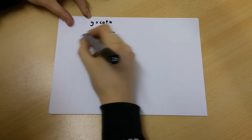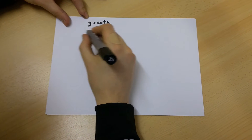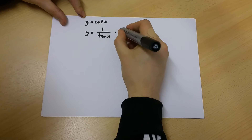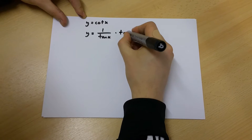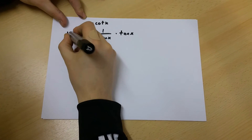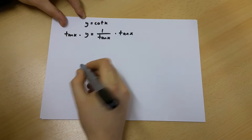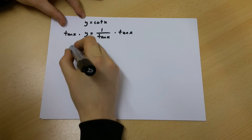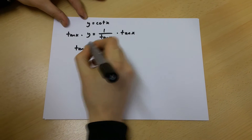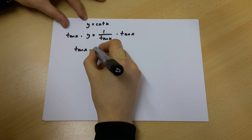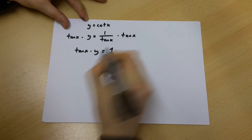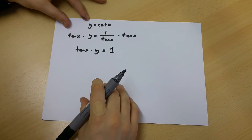We then multiply both sides of this equation by tan x. If we do this we're going to get tan x multiplied by y equals 1.